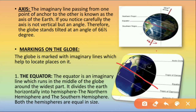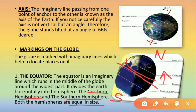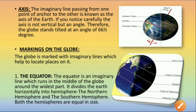The equator divides the earth into the northern hemisphere and the southern hemisphere. Both hemispheres are equal in size. Above the equator, all the area up to the north pole is known as the northern hemisphere. Below the equator, all the area down to the south pole is known as the southern hemisphere. This is the first marking on the globe: the equator.